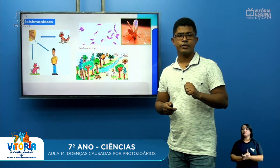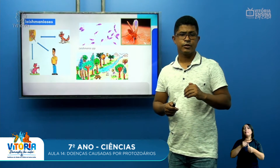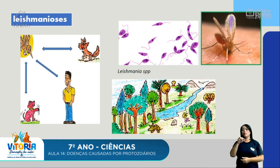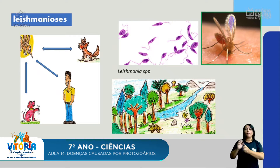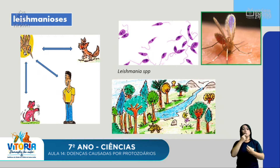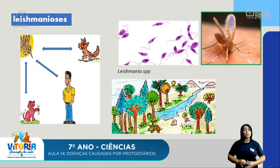A primeira doença que falaremos será sobre as leishmanioses. As leishmanioses são doenças causadas pelo protozoário chamado Leishmania. Essa Leishmania é um protozoário interno que vive dentro da corrente sanguínea e também no trato digestivo de pequenos mosquitos chamados de mosquitos-palha.